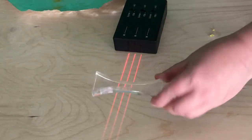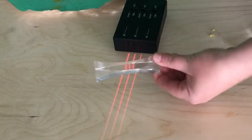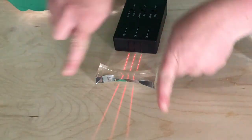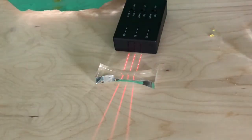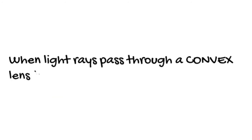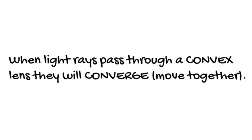Let's look at this in practice. A simple convex lens looks a little something like this — thin at the edges and thicker in the middle. When light rays pass through a convex lens, they will converge or move together.